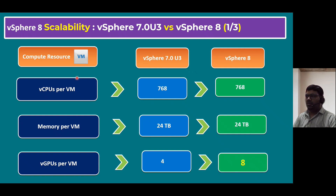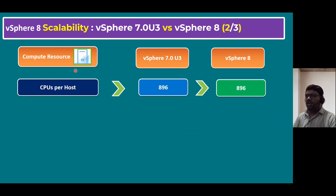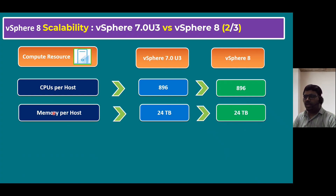Now let's understand the compute resource from a maximum host perspective. Physical CPUs per ESXi host: the maximum in vSphere 7.0 is 896, and the count is the same in vSphere 8. Memory per ESXi host maximum is 24 terabytes, and in both vSphere 7 and 8 the maximum limit is similarly 24 terabytes.